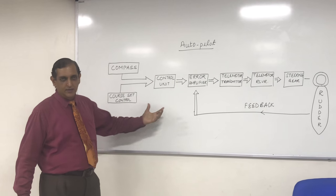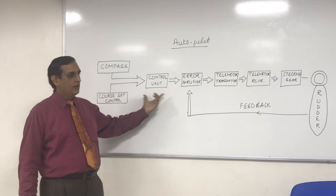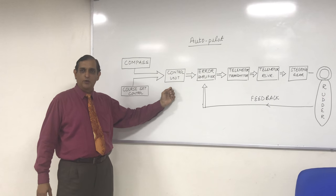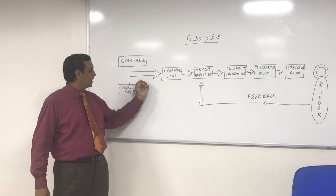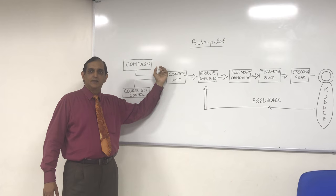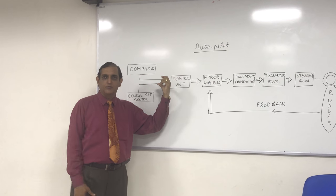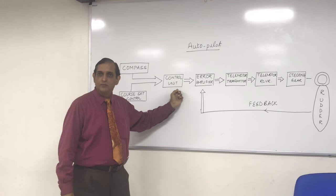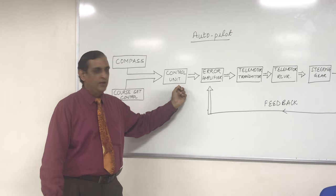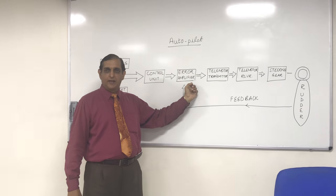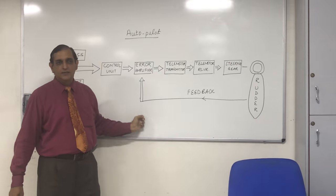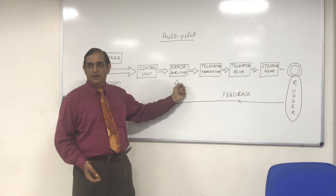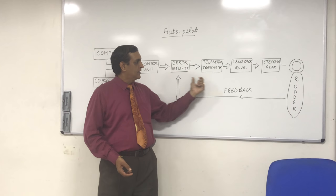Now, how does the autopilot work? The heart of the autopilot is the control unit. You are giving a compass feed to the control unit, and your course set is also coming into the control unit. A comparison will be done between the course set and the compass heading. Based on the difference and some settings in the control — like rudder and counter rudder, which we will come to later — the control unit will give some output such as starboard 5 or starboard 10. That will go to the error amplifier, which also gets a feedback from the rudder to say what is the current position of the rudder. The current position and the rudder requirement are compared, giving a final signal to the telemotor transmitter.